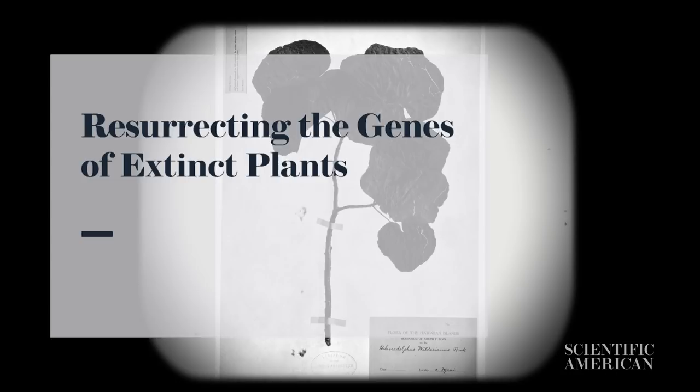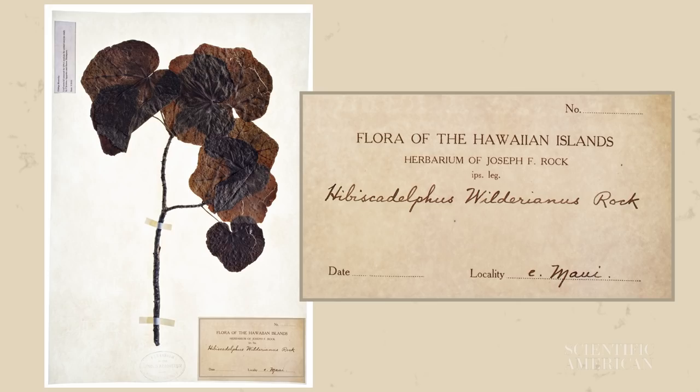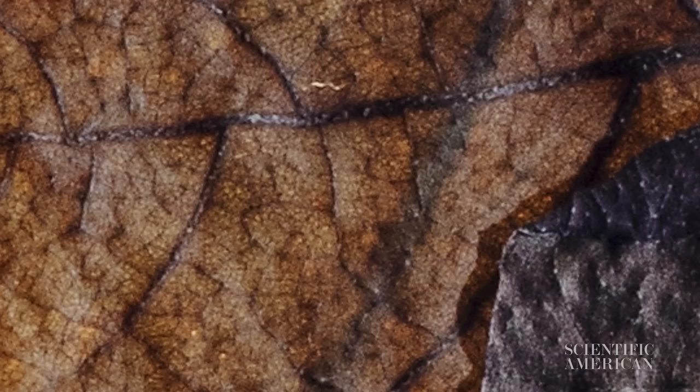The researchers started with a species of Hawaiian mountain hibiscus that went extinct in 1912. Taking a small piece of a preserved specimen, the scientists planned to use the flower's DNA to reconstruct the plant's fragrant molecules.